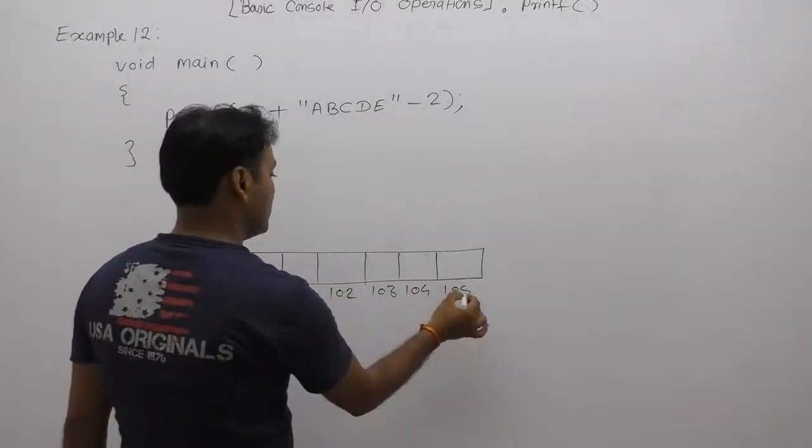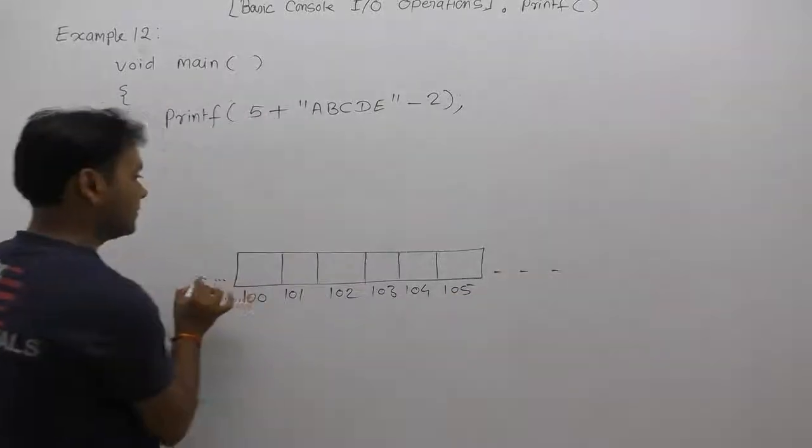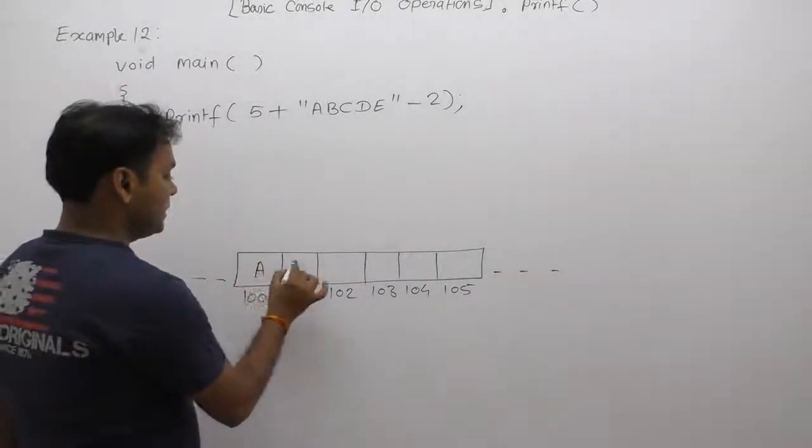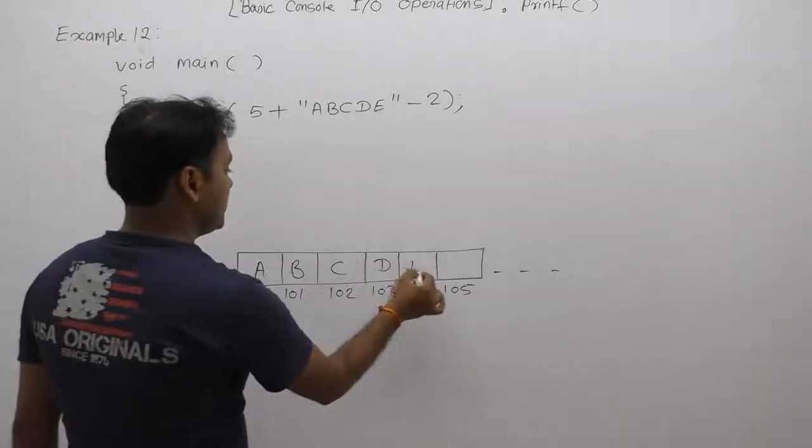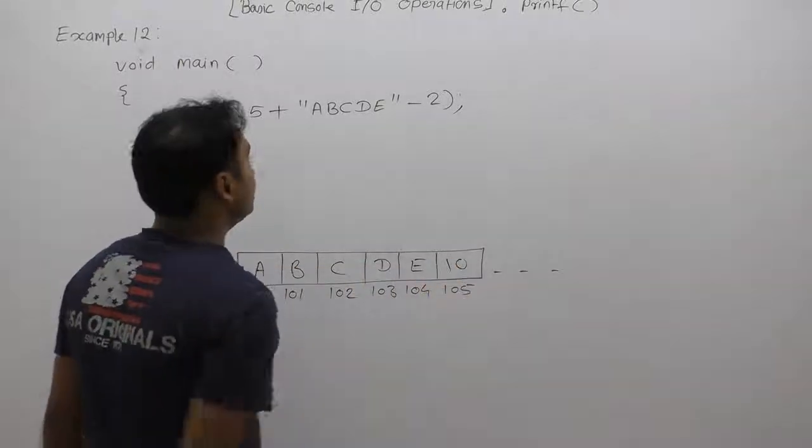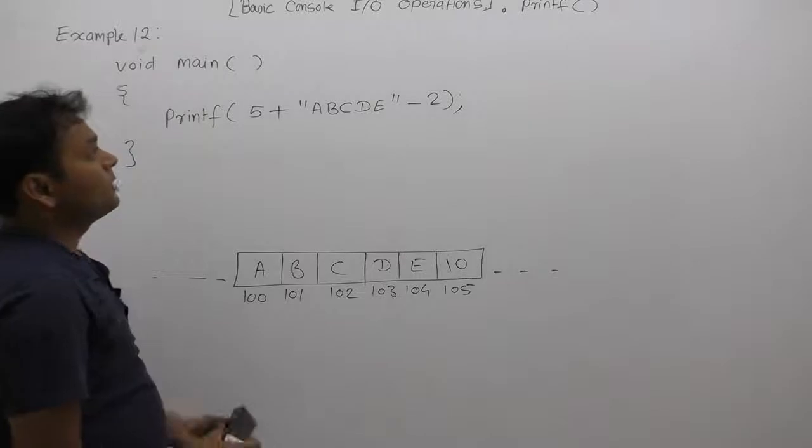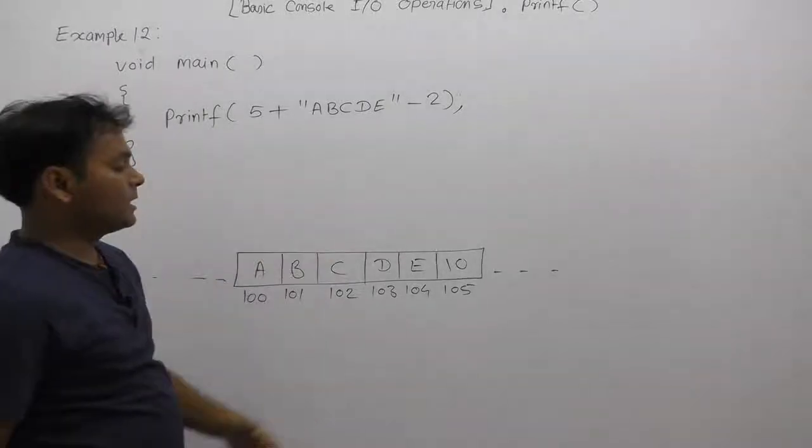Storing A, B, C, D, E, and finally null, the end of string character. Here we are replacing the base address of the given string.